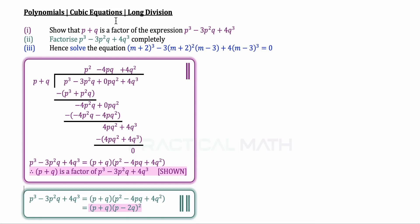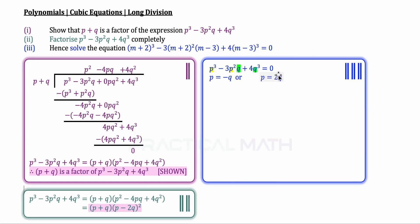Moving on to part 3, we are asked to solve the equation using the results from parts 1 and 2. For both parts, they involve a cubic expression set equal to zero. Setting each bracket equal to zero: p plus q equals zero gives p equals negative q, and p minus 2q equals zero gives p equals 2q.